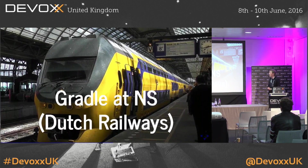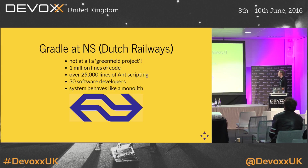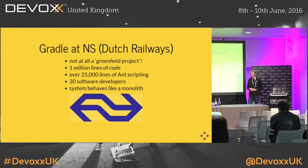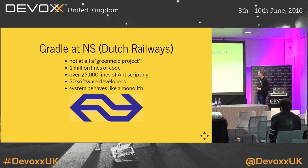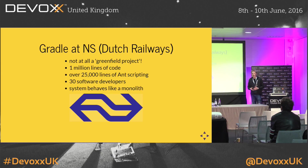So what did we do at De Nederlandse Spoorwegen — NS, the train company — with Gradle? The project started in 2008 and we inherited some Ant scripting from a previous project at the train company. This concluded into 25,000 lines of Ant scripting. In total, this system consists of one million lines of code: Java code, database scripts, and configuration. Thirty software developers are working on it. At our build server, this system used to behave like a monolith — one small change in one file would trigger a build of the entire system, so a build would run for 90 minutes, which was way too long. So we wanted to migrate.